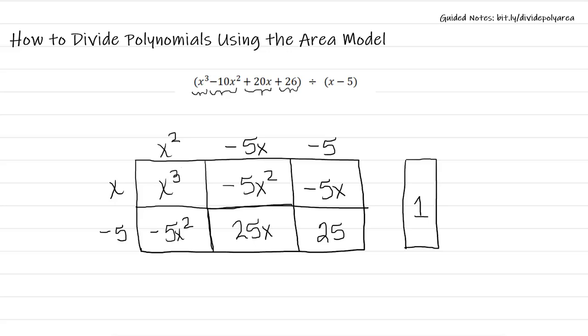So my quotient is actually going to be the x squared minus 5x minus 5 with this remaining 1 that is not evenly divided by x minus 5. So this is how we have to write our final answer.